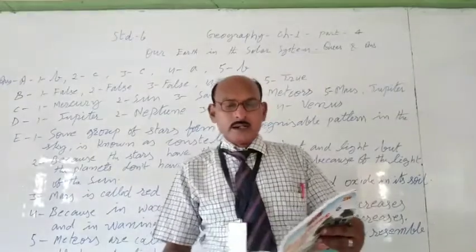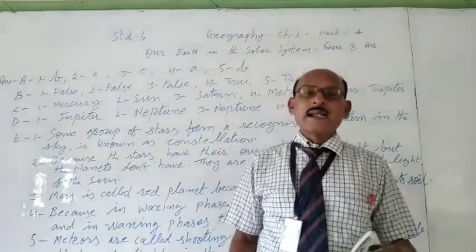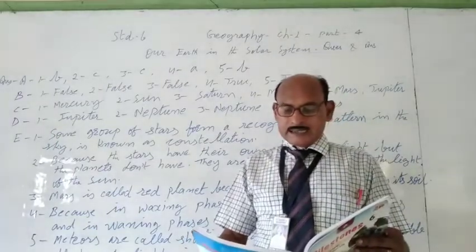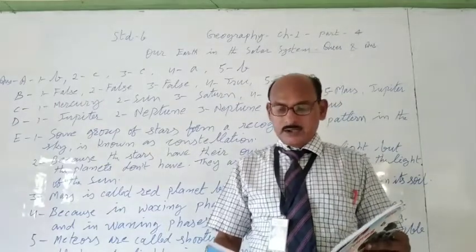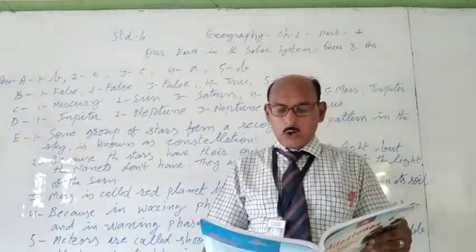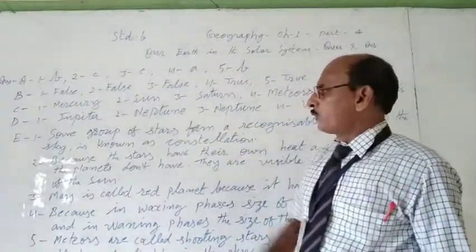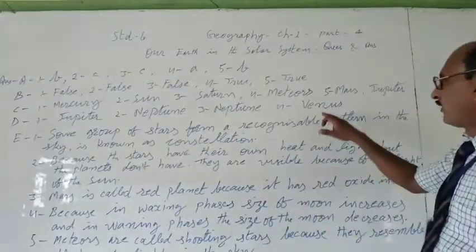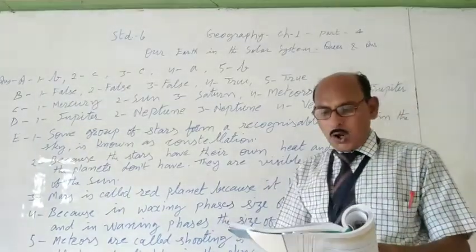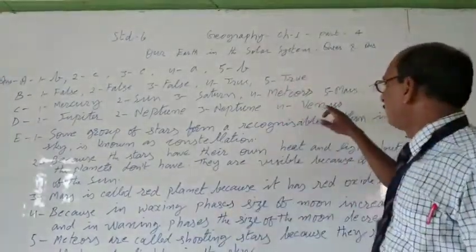So children, D, some tables are given there and after looking at those tables, you have to write the answer. The question is talking about which planet is the fastest in the rotation, so the answer will be Jupiter. Second, which planet takes the longest to revolve around the sun? The answer will be Neptune. And the third answer also will be Neptune. And the fourth one is Venus, talking about which planet takes longer to rotate than to complete one revolution.